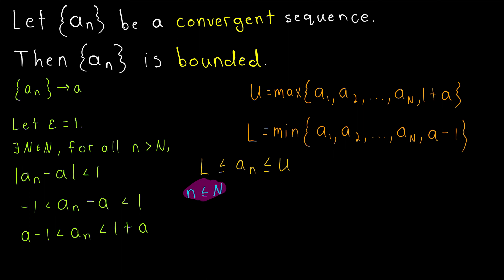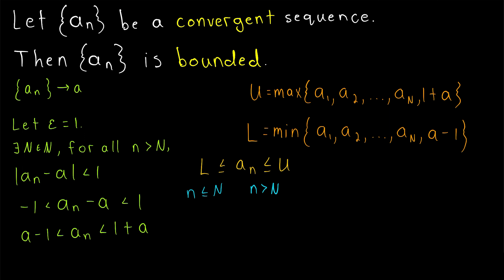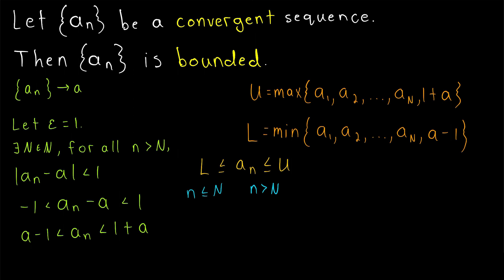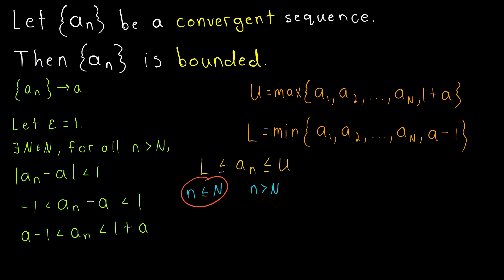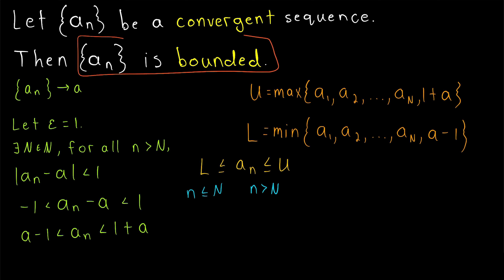Remember, the only terms a_n with n less than or equal to big N are accounted for in these sets, a_1 through a_N. On the other hand, for terms of the sequence a_n where n is greater than big N, big N was selected specifically using the definition of a convergent sequence to ensure that all following terms lie between a minus one and one plus a. Since one plus a is in this set that u is the maximum of, u is definitely greater than or equal to one plus a. And since a minus one is in this set that l is the minimum of, l is certainly less than or equal to a minus one. So for all terms of our sequence a_n, whether n is less than or equal to big N or greater than big N, we found an upper bound u and a lower bound l so that a_n lies between l and u. And so, our sequence is bounded.